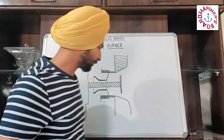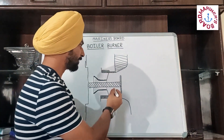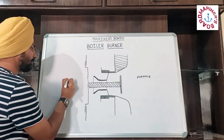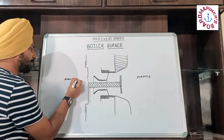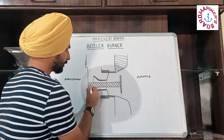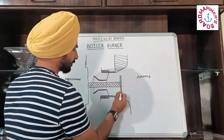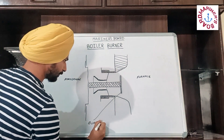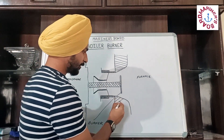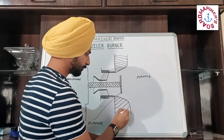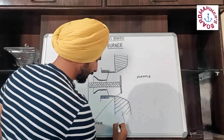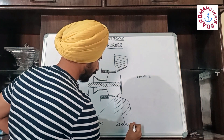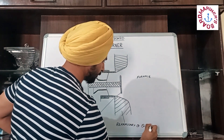Let me come to this diagram. This is the furnace and this side is the atmosphere. This you are seeing is the burner. This is the refractory of the boiler, also called the quarl — Q-U-A-R-L.